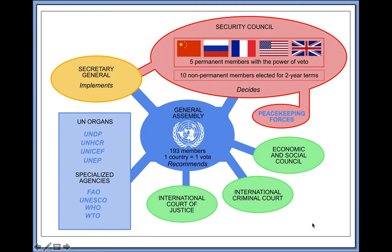The five permanent members and ten non-permanent members each serve two years. There are around 110,000 peacekeeping troops stationed around the world in many missions. You also have the Secretary General and the General Assembly, where every country gets one vote.